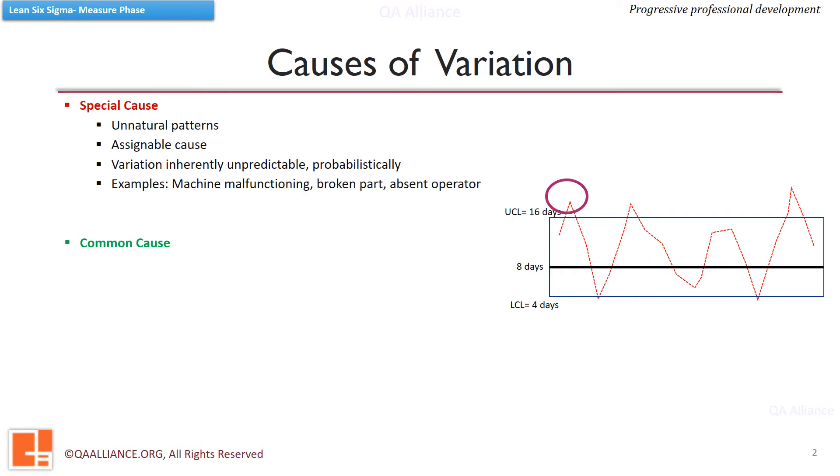For example, machine malfunctioning, a broken part or an absent operator. These are the special causes which may lead to variation. And it is also not easy to predict such occurrences. When there are special causes present, the process is not stable and we cannot call it under statistical control.